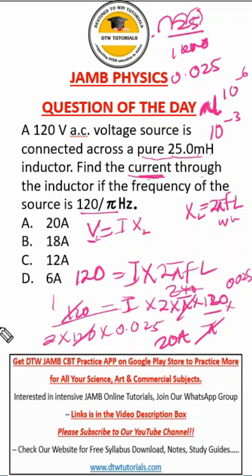When you use your calculator, 1 divided by 2 times this, you are going to get 20 amperes. And our answer here is A. So this is how you solve for this.